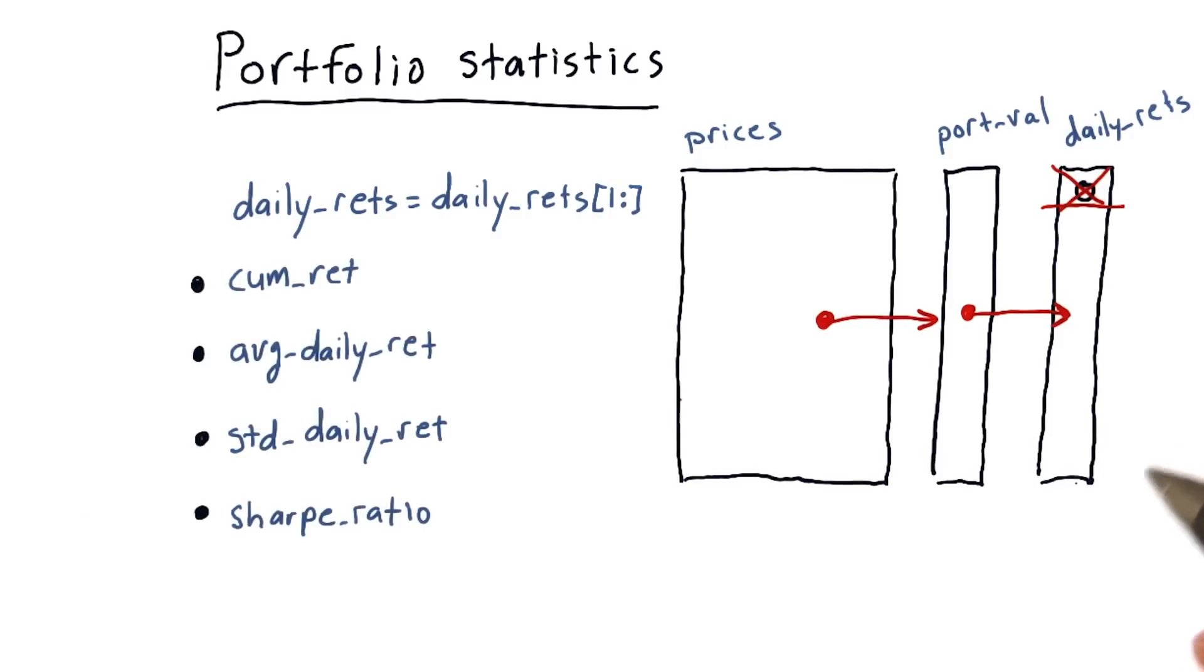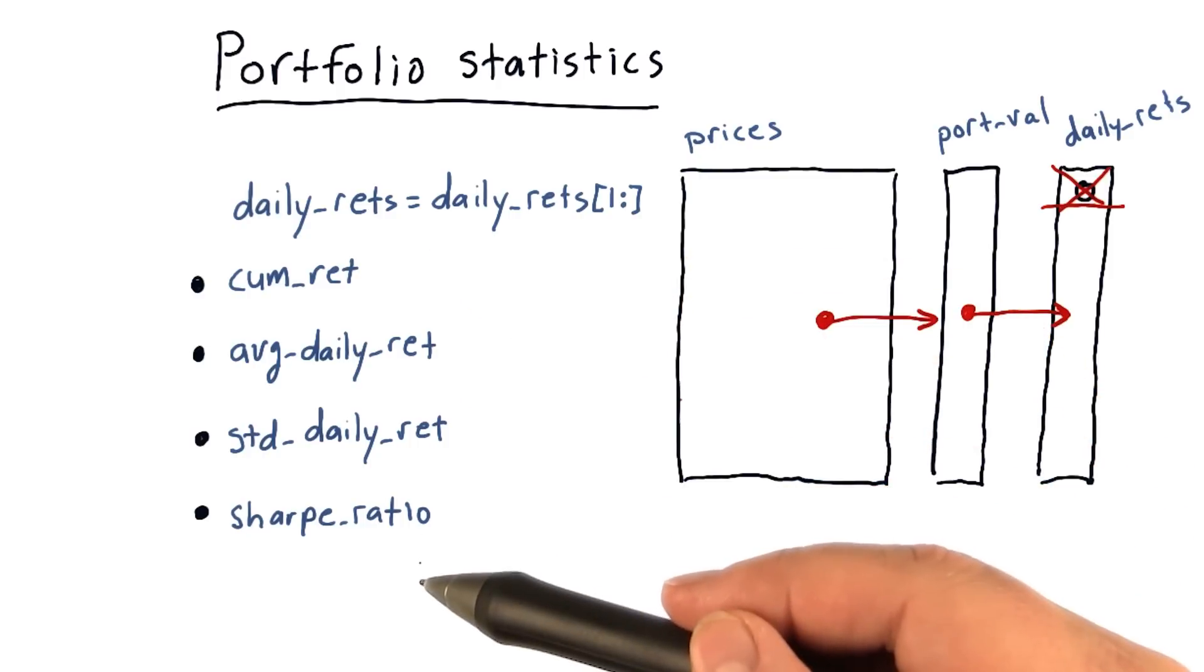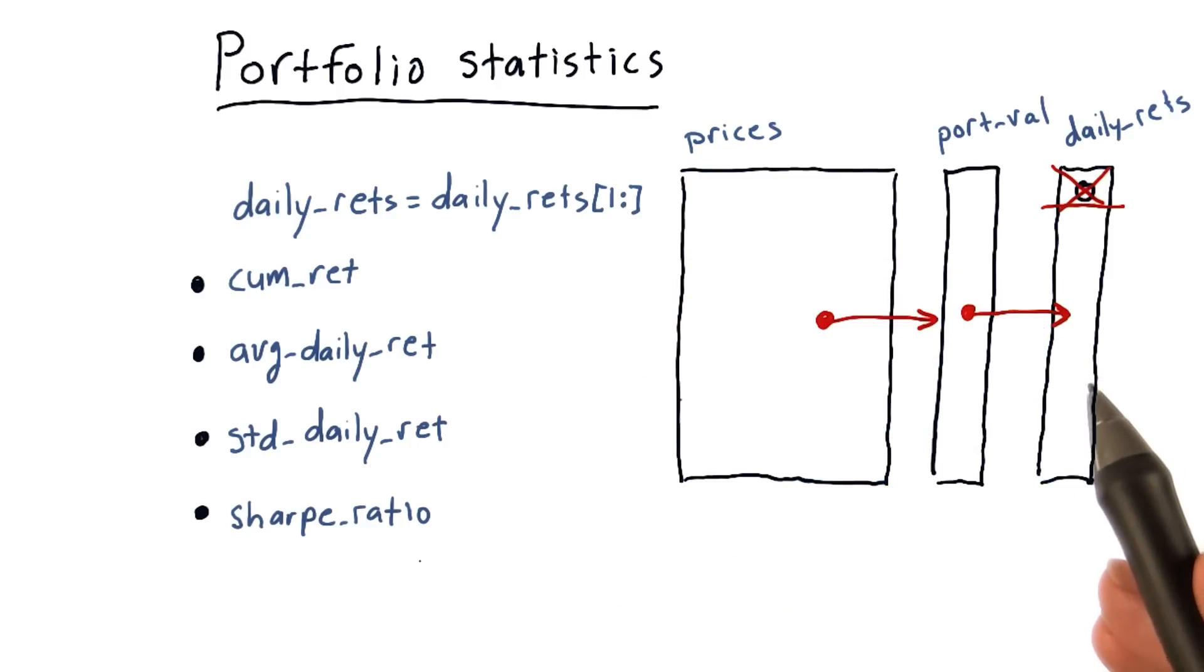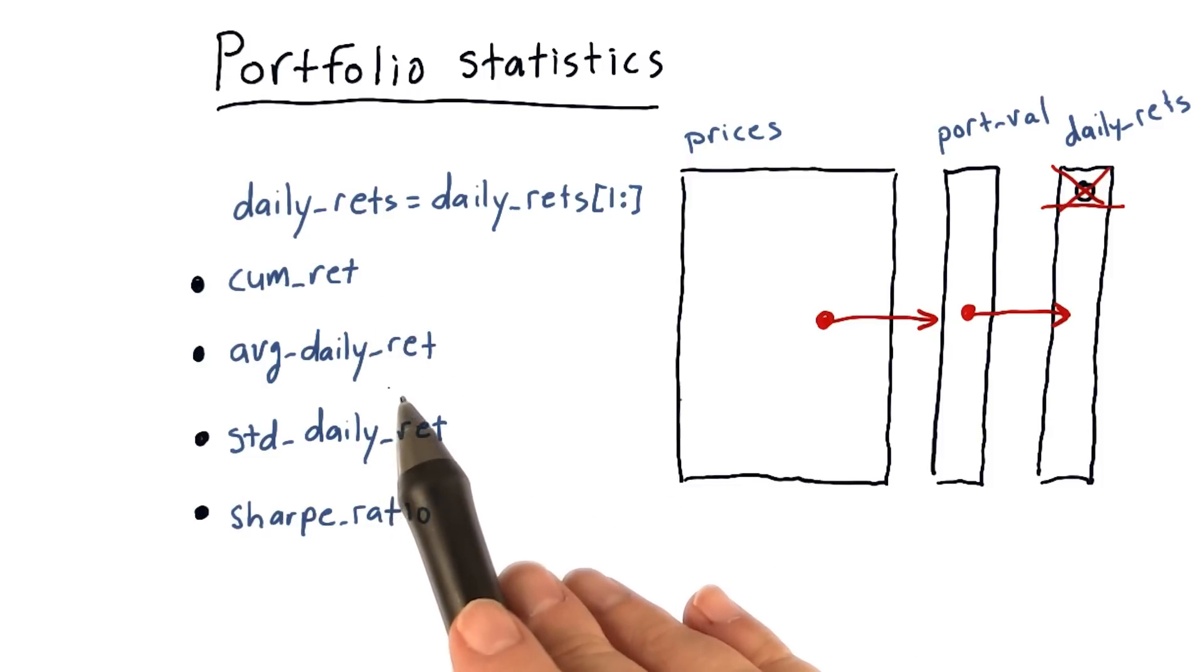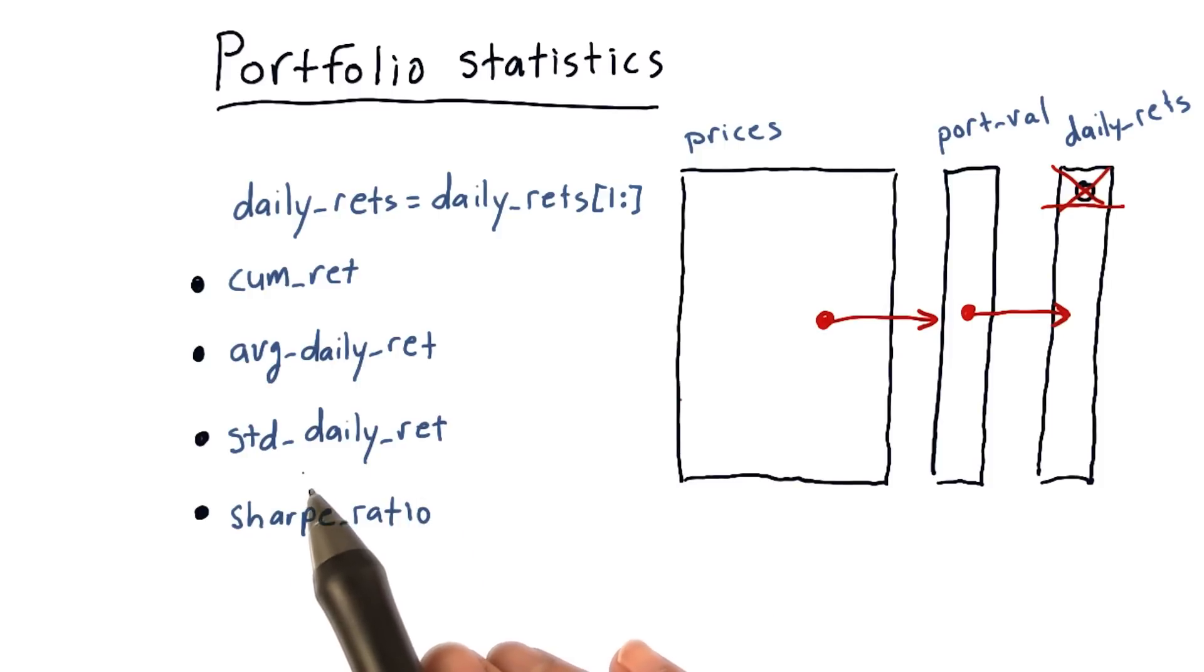Now that we have this information, we can compute four key statistics that everybody wants to know about regarding the performance of a portfolio. They are cumulative return, average daily return, standard deviation of daily return, and Sharpe ratio.